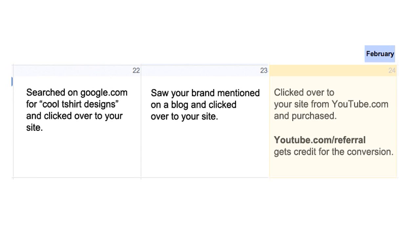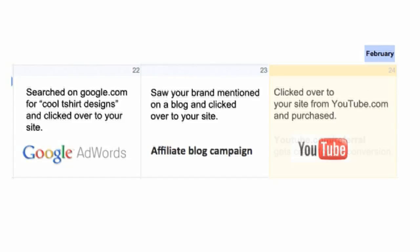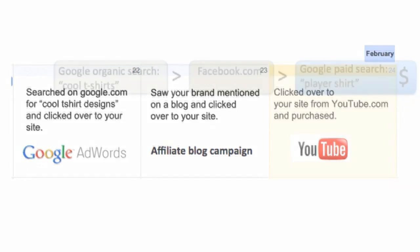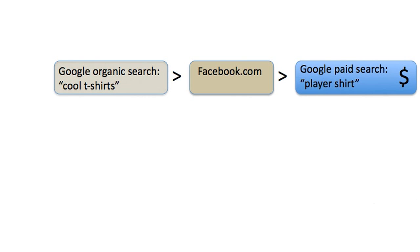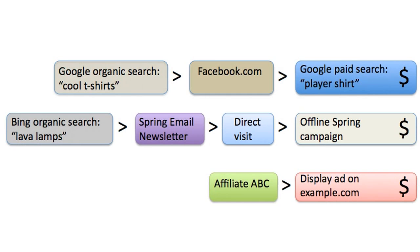The Multi-Channel Funnels reports answer these questions and others by showing how your marketing channels work together to create sales and conversions. The reports are generated from conversion paths — the sequence of channel interactions that lead up to conversions. Google Analytics can track visitor interactions with search engines, referral sites, social networks, and even offline channels.